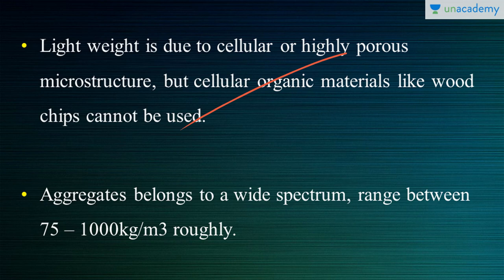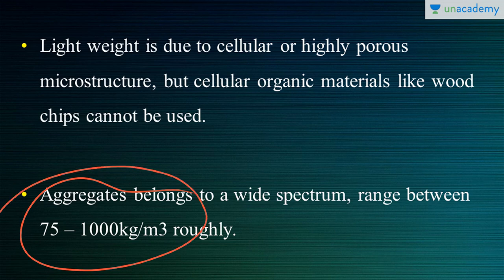There is a sweet spot — only a few selected coarse aggregates can be used. Wood chips, for example, are not strong enough, may disintegrate, and are so light that they may absorb water and create bloating inside the concrete matrix. There is a wide range of aggregates that can be chosen for lightweight concrete, with a density spectrum ranging roughly from 75 to 1000 kg/m³.